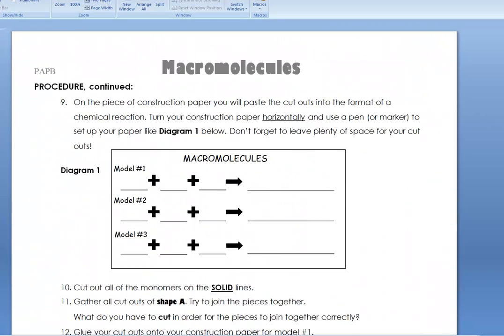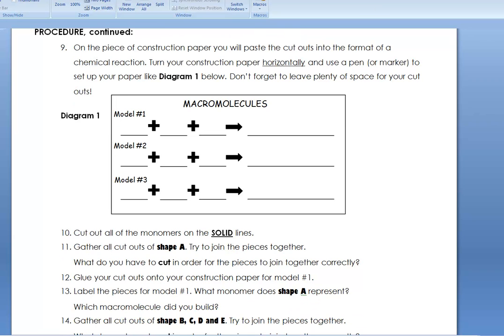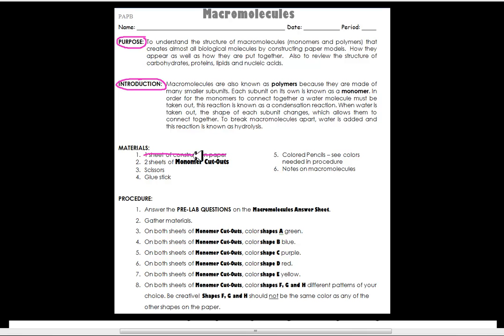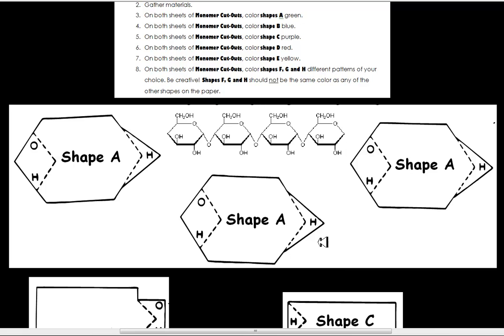Let me just show you here. The procedure, we're not going to take that construction paper. We're going to take these, and you can see there's shape A, B, C, D, and E, as well as F, G, and H. They look like this, so here's shape A, and here's shape A, and here's shape A. I'm whistling my S's.